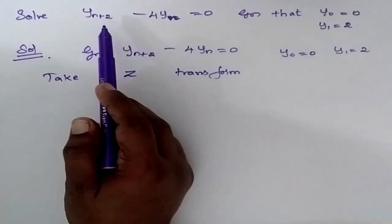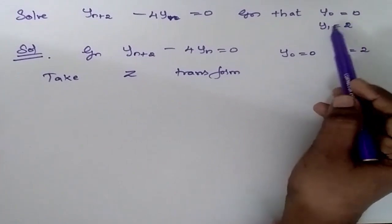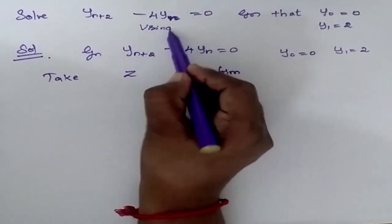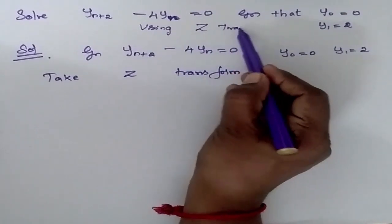Solve the equation given that y naught is equal to 0 and y1 is equal to 2. We are going to solve this using Z transform.